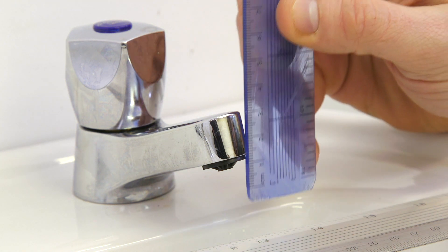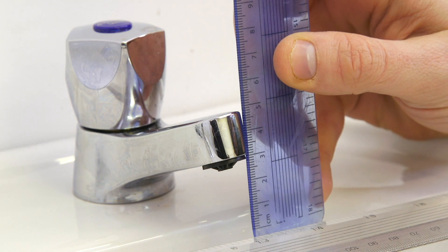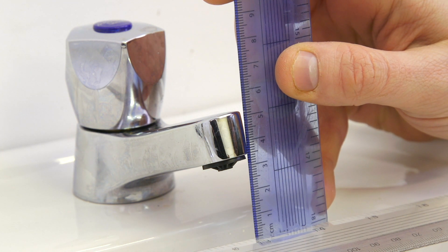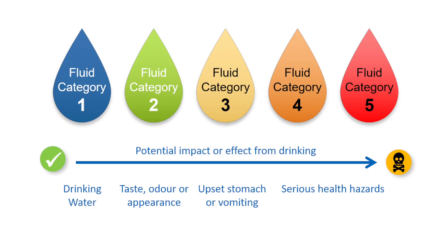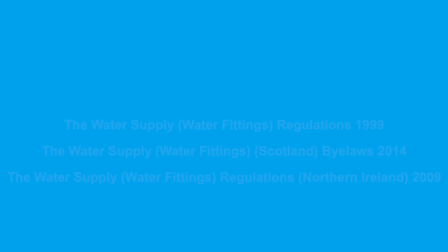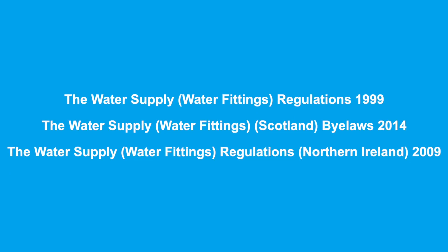You can protect against backflow with tap gaps, air gaps or mechanical devices. The backflow protection needed depends on the level of risk. If you have any concerns, please speak to your local water company. To find out more about backflow, the water fittings regulations, or water bylaws in Scotland, you can contact your local water company.